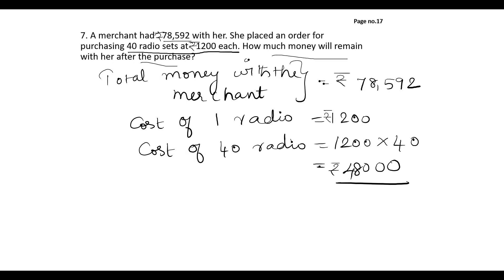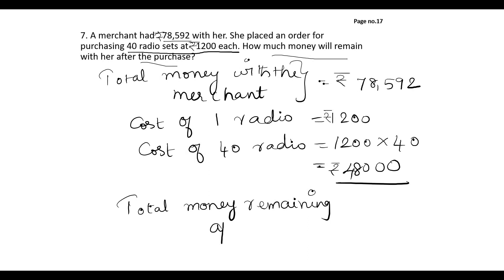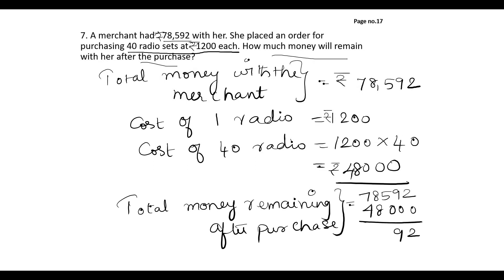To calculate the remaining amount, subtract the cost of 40 radios from the total amount she has: 78,592 minus 48,000. So she will be having 30,592 in her hand after this purchase.